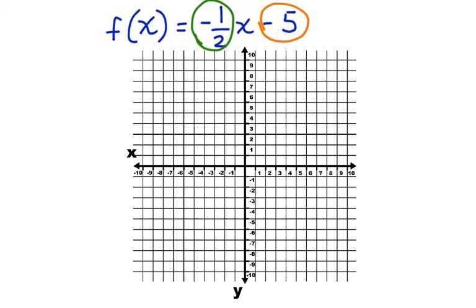Here's our coordinate grid. We're going to start by graphing the negative 5. We're going to start at the origin and go down 5: 1, 2, 3, 4, 5. There's our point. Now our slope is a negative 1 half. Remember that slope is equal to the rise over the run.